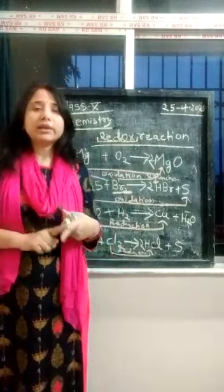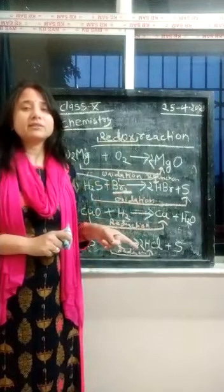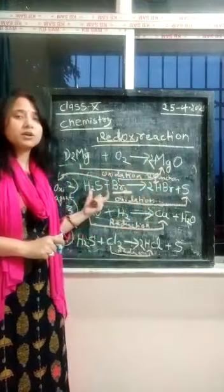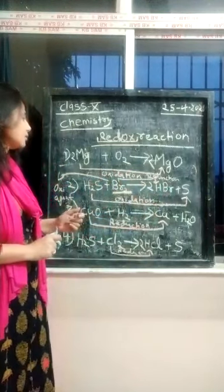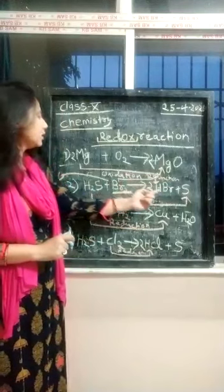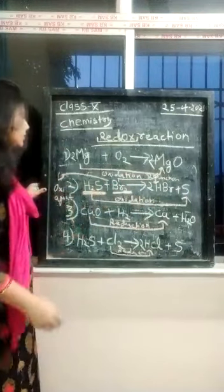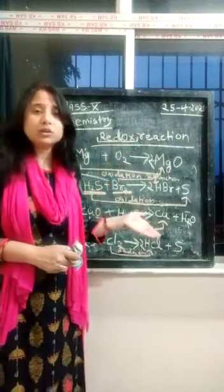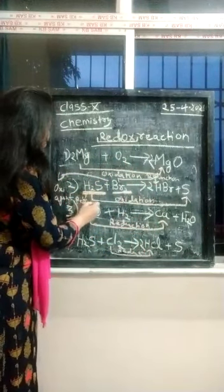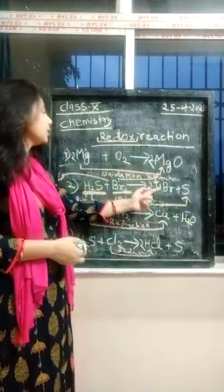Whatever compound, element, atom, or molecule — whatever species is oxidized — that species itself acts as the reducing agent. In this reaction, hydrogen sulfide is present, and because of its presence bromine is reduced. Hydrogen is being added, so this is the reducing process. That means hydrogen sulfide is the reducing agent, and because of hydrogen sulfide, bromine is reduced to hydrogen bromide.